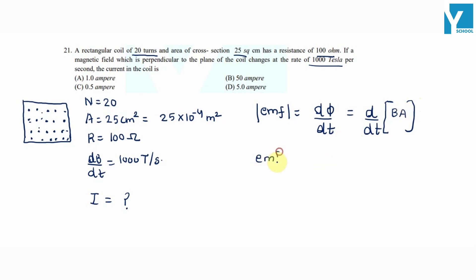So, magnitude of EMF is equal to N times A times dB/dt. Area of cross section is 25×10⁻⁴ into number of turns is 20. And dB/dt value is 1000.